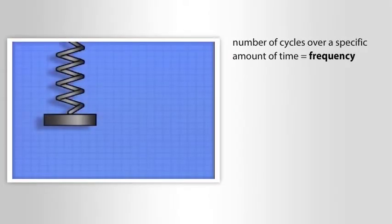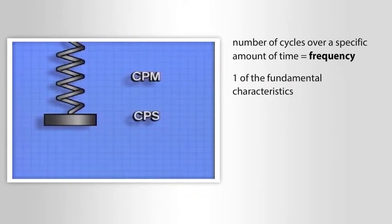The number of cycles that occurs over a specific amount of time is known as the frequency of the vibration. Frequency is one of the fundamental characteristics of vibration.